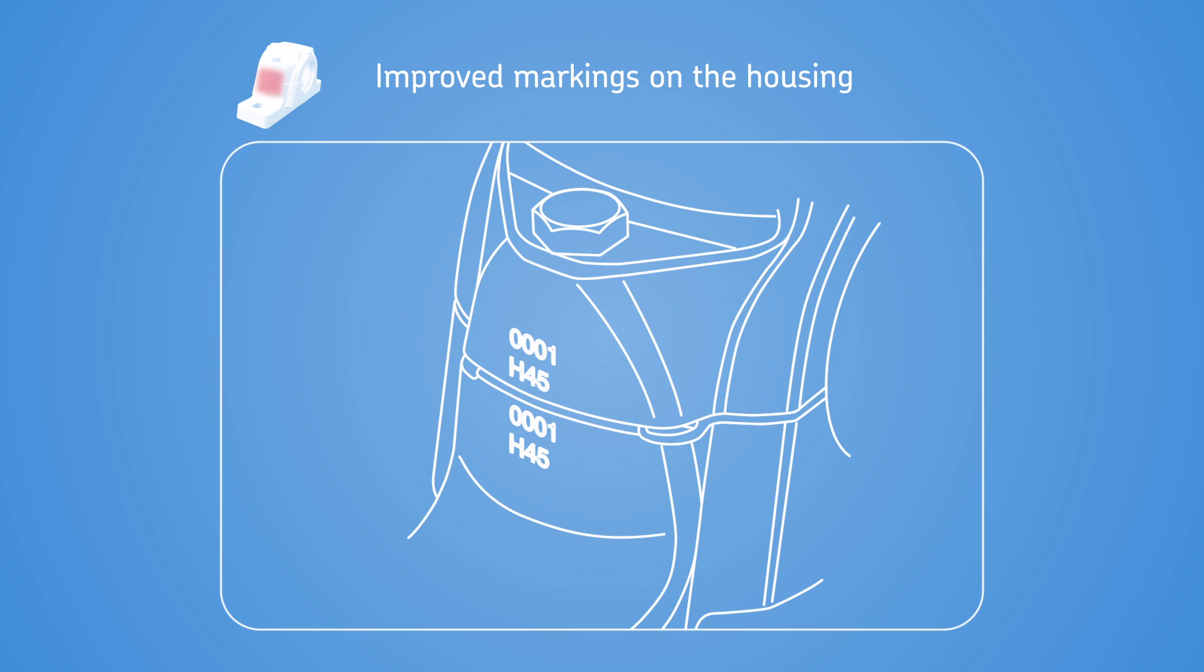The housing cap and base are precisely matched during manufacture and are not interchangeable. To help avoid mismatches, the serial numbers on both parts are more readable on the SE. The designation on the housing cap has also been enhanced for readability and now contains the complete housing designation for better traceability.